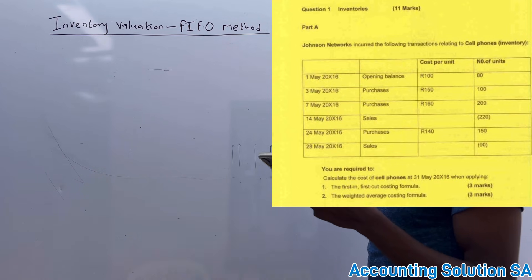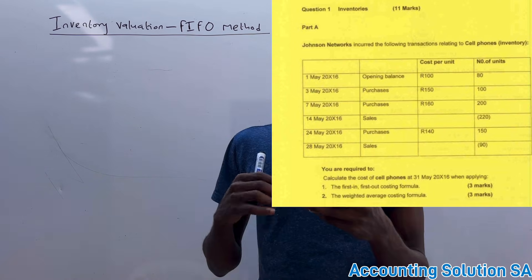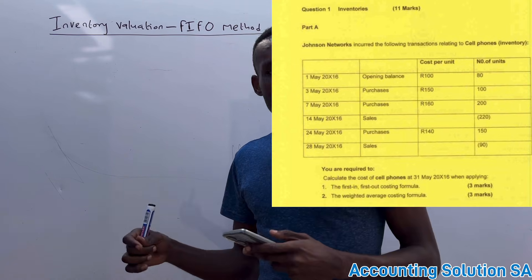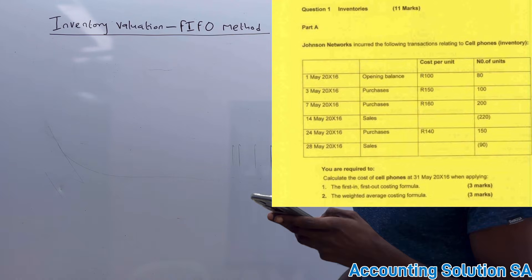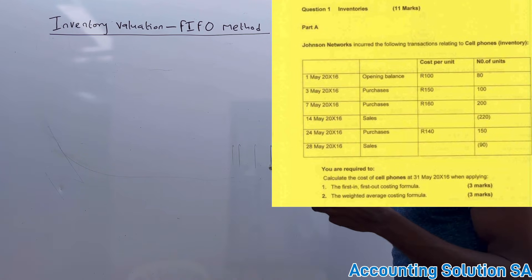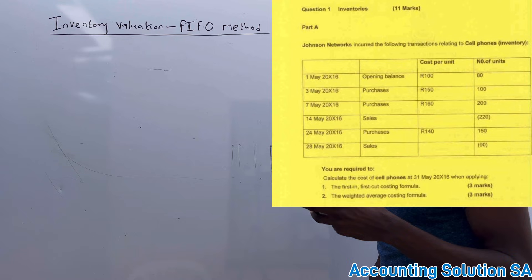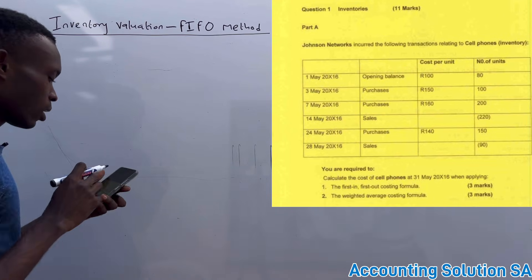For average weighted cost method please go to my other video. The information they give us includes opening balance, purchase, cost price per unit, number of units, and they give us sales and other purchases. The first step that we need to do is to calculate the units on hand because in this case it's not given.